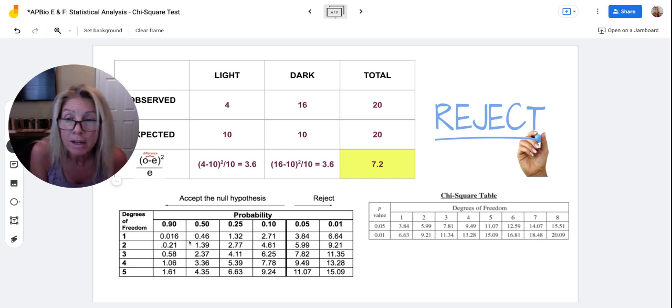So here we had one degree of freedom and they only are showing you the reject numbers. So if you look right here on one degree of freedom, we reject at 3.84 or any number bigger than that because the probability is so low.